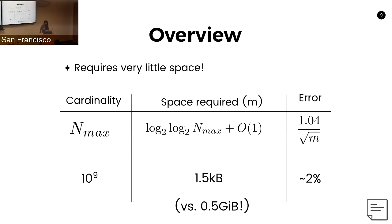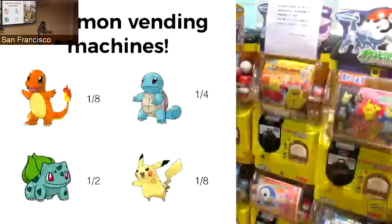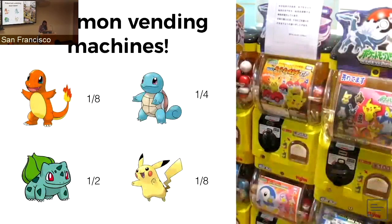Putting this into real numbers: for a dataset with a billion unique values, like our IPv4 problem, it requires about 1.5 kilobytes of space and would have an error somewhere around 2%. Let's build out the intuition for how this algorithm works a bit.